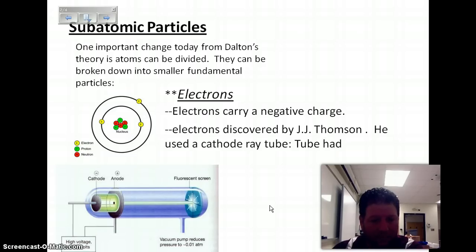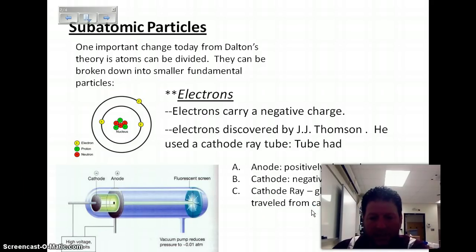It had a cathode, which was a negatively charged piece, the anode, which is a positively charged piece, and it had a light beam, which was a glowing beam that traveled from the cathode ray to the anode.